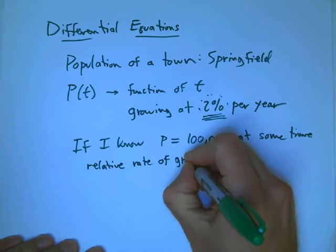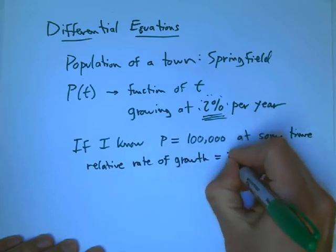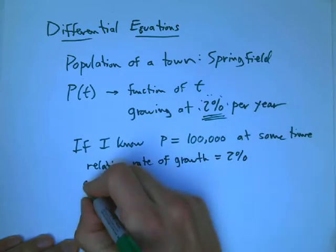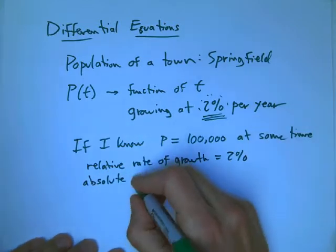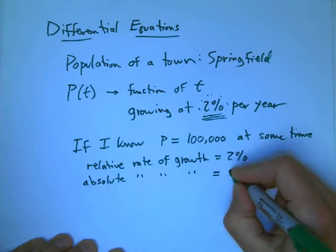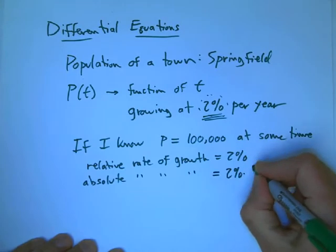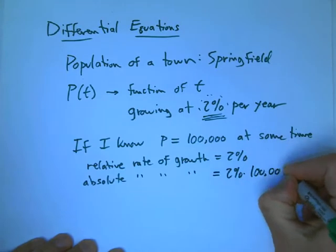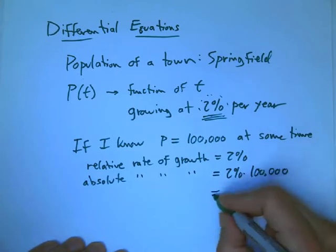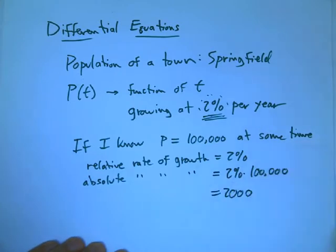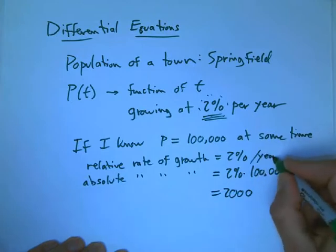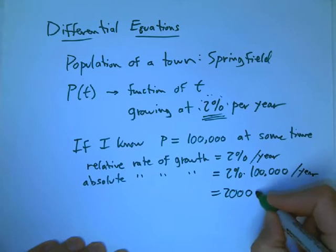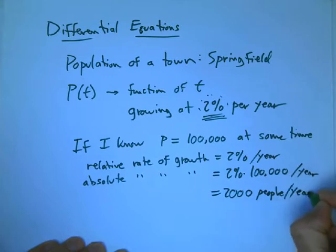The relative rate of growth is 2%, that's as a proportion of the population. The absolute rate of growth is then 2% times 100,000 people. 2% of 100 is 2, and so that's 2,000 people per year.